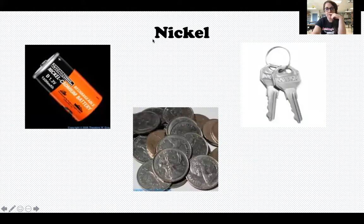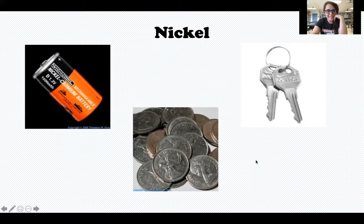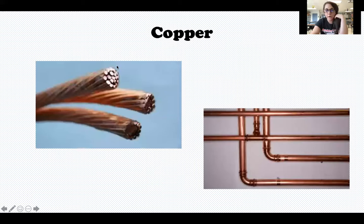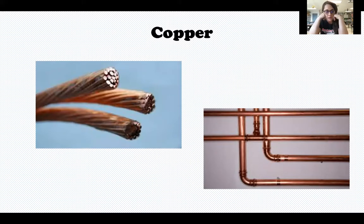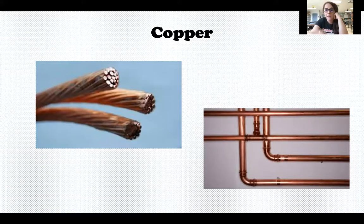Nickel is another type of metal. Nickel is found in batteries. Coins are made out of nickel — not just nickels, but other coins too — and keys. The last one is copper. We discussed last week that copper is the best electrical conductor. A lot of wires, charger cords, telephone pole wires, and plumbing water lines are made from copper.